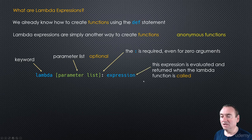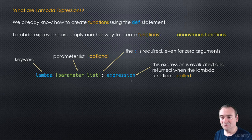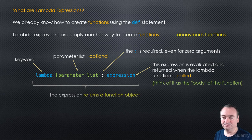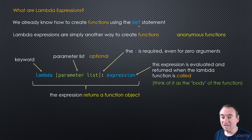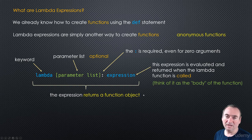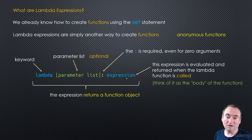After the colon comes the expression. When the lambda function is called, this expression is evaluated and returned. The lambda expression itself returns a function object. When you run this piece of code — lambda, your parameter list, colon, the expression — it's not actually evaluating the expression at that point, just like when you run the def statement, it's creating the function, not running it. This will actually return a function object — a function with these parameters and this expression as the return value.